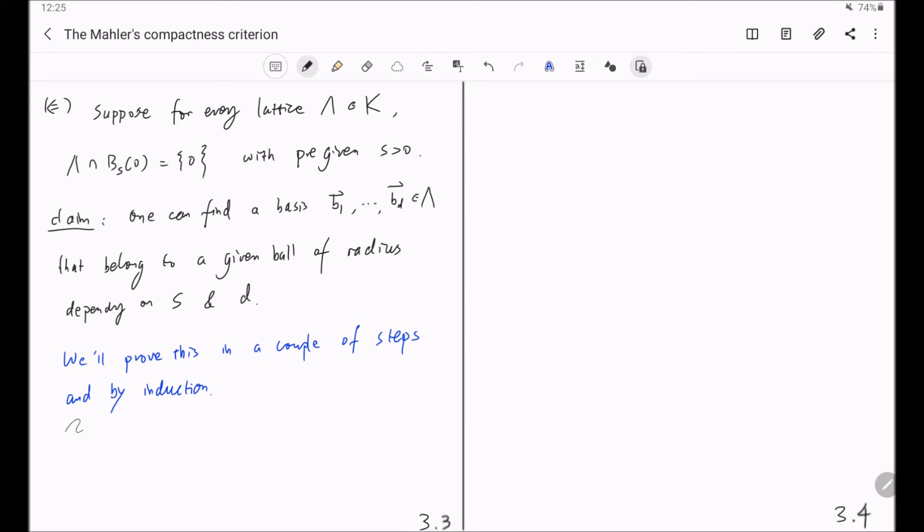First, let's choose vector b_1 in lambda with the property that the norm of b_1 is the minimum such that b_1 is the shortest non-zero vector in lambda. Namely, the norm of b_1 is the minimum among all those non-zero vectors in lambda.